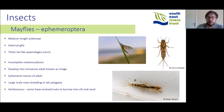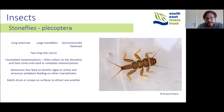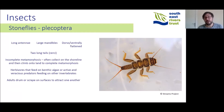Stoneflies are another group of insects with long antennae, large mandibles, and a dorso-ventrally flattened body, with legs that tend to splay out to the side. They have two long tails called cerci, which can make them difficult to identify compared to mayflies, especially as the tails can be easily damaged when collected. They go through incomplete metamorphosis, and the nymphs will actually crawl onto the bank of a water body to develop, making them quite prone to predation by fish. They can be herbivorous, feeding on benthic algae, but other species are voracious predators. Adults attract mates by drumming or scraping their body on a stone, leaf, or piece of wood.